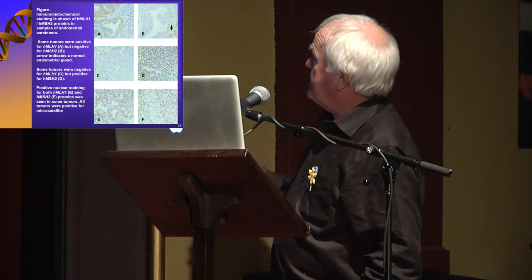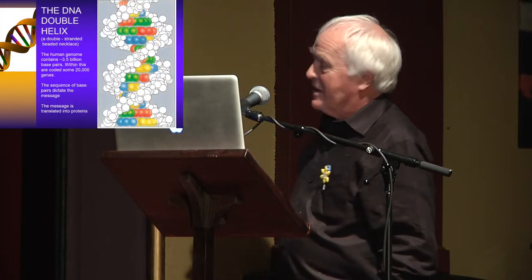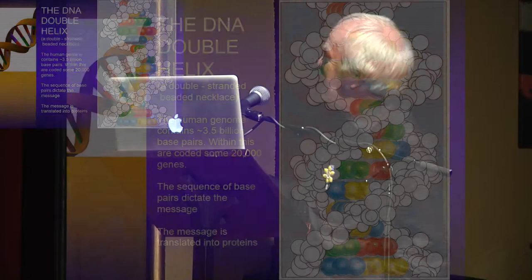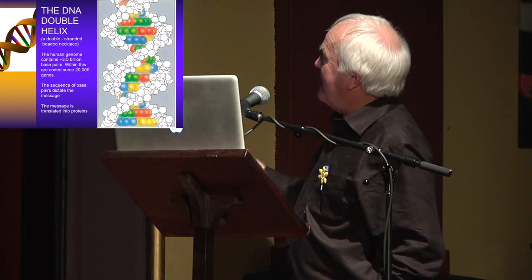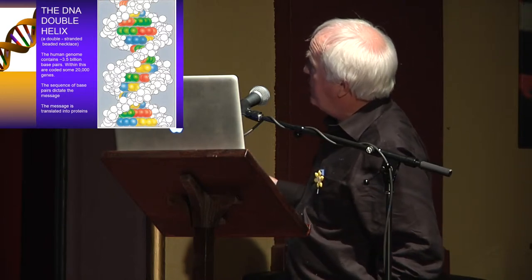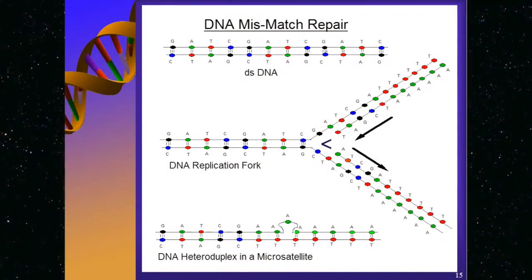Here we have Watson and Crick's DNA double helix. I just wanted to do a quick show-and-tell of how this works. Here we have the beaded necklace of DNA, and here we have a replication fork with a protein moving through the DNA and copying the lagging strands.